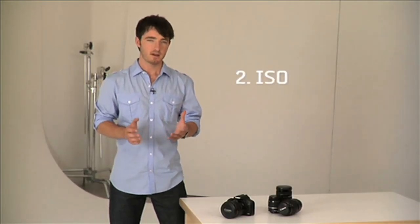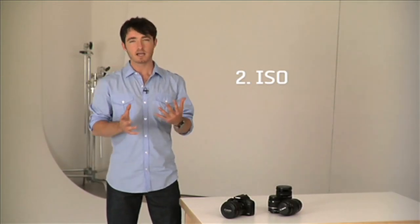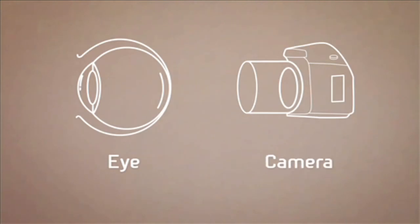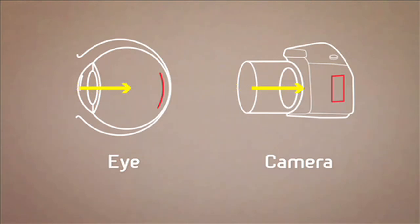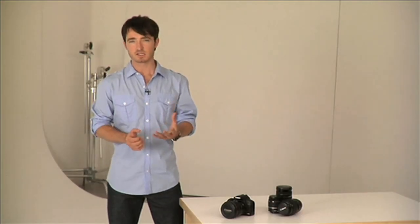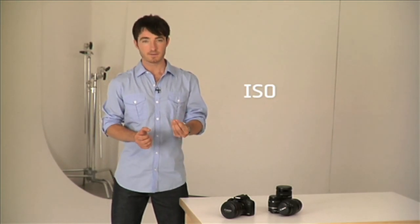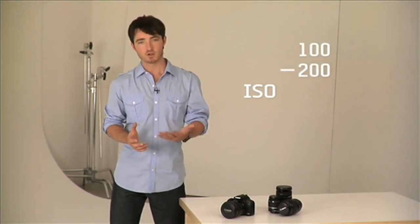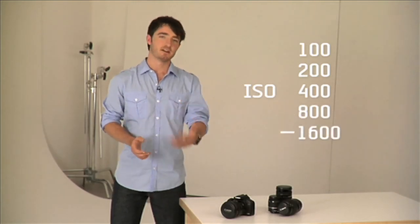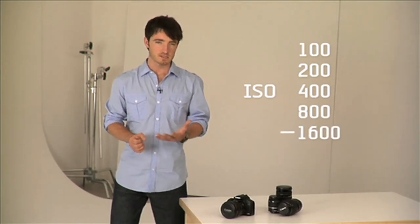Now, ISO. ISO is a measure of how light sensitive the camera is. With digital cameras, you can change the sensitivity of the sensor by simply changing the ISO. Using our eye analogy again, you can think of it as the retina at the back of your eye, which is the part that actually captures the image. So the higher the number, the more light sensitive the sensor in the camera is. With each increase of ISO value, you'll notice that they double — so they count 100, 200, 400, 800, 1600, and so on, each becoming more and more light sensitive.